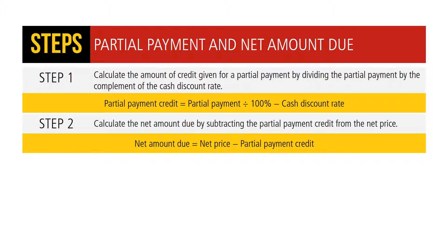To calculate partial payment credit and net amount due: Step 1: calculate the credit given for the partial payment by dividing the partial payment by the complement of the cash discount rate — partial payment credit equals partial payment divided by (100% minus cash discount rate). Step 2: calculate the net amount due by subtracting the partial payment credit from the net price — net amount due equals net price minus partial payment credit.